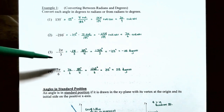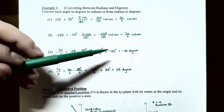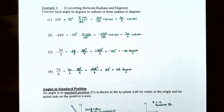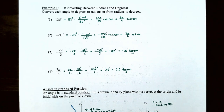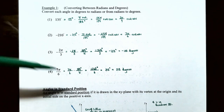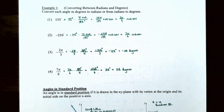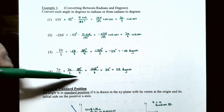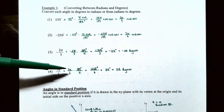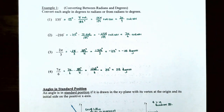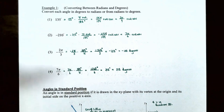Number four: convert 7 pi divided by 6 radians to degrees. Multiply 7 pi divided by 6 by 180 degrees divided by pi. The pi cancels, leaving 7 times 180 divided by 6, which is 1260 divided by 6, giving 210 degrees. So 7 pi divided by 6 radians is equivalent to 210 degrees.